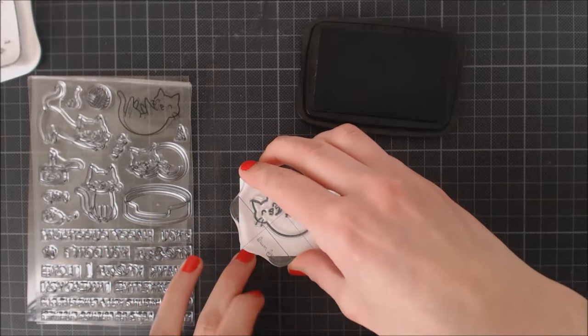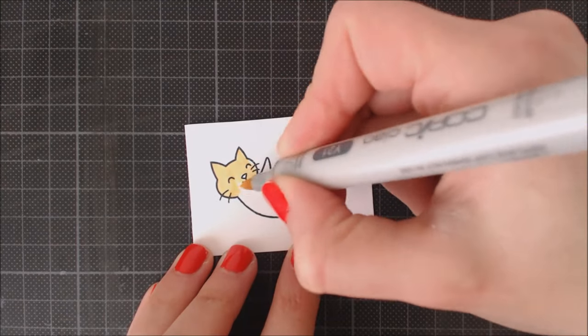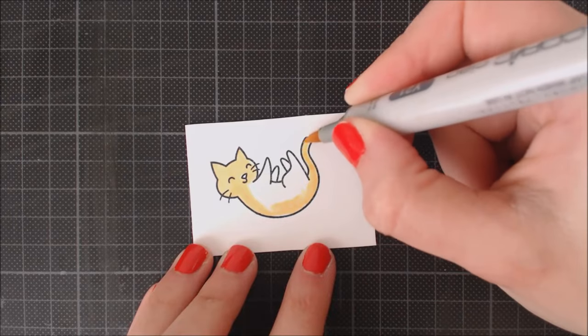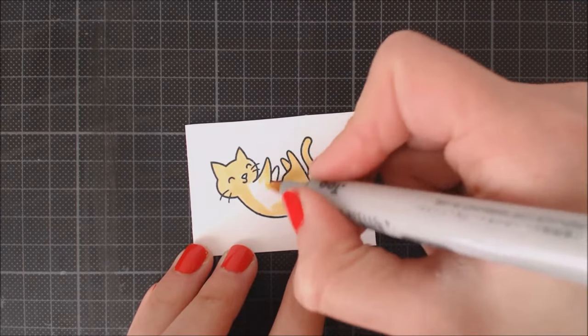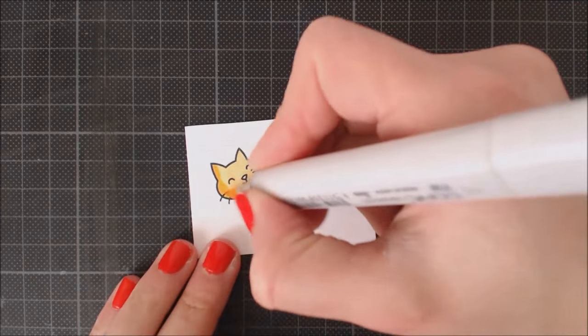I'm coloring it with Copic markers, which are alcohol-based markers. So I stamp it with die black ink. This way the ink won't bleed while coloring.